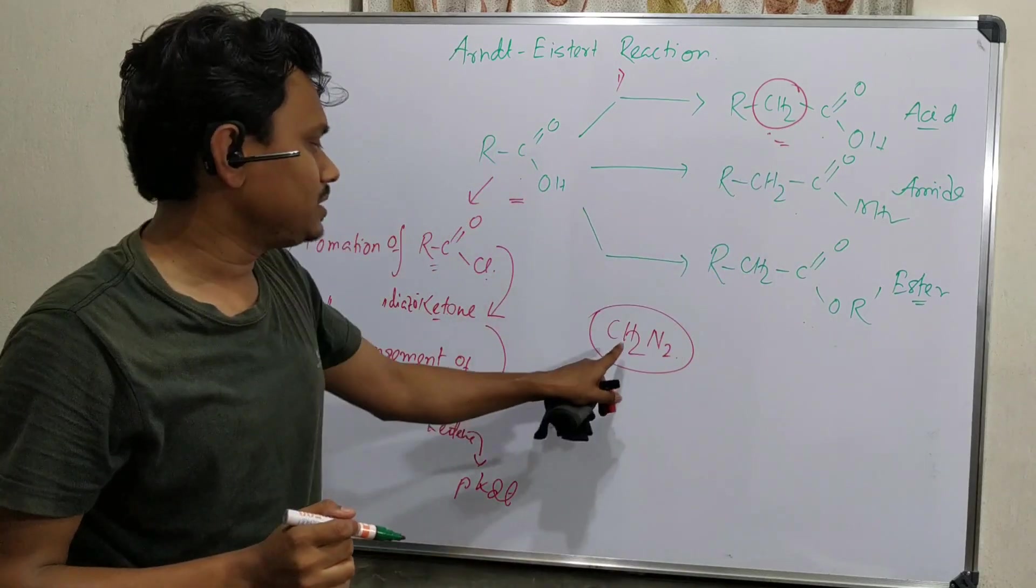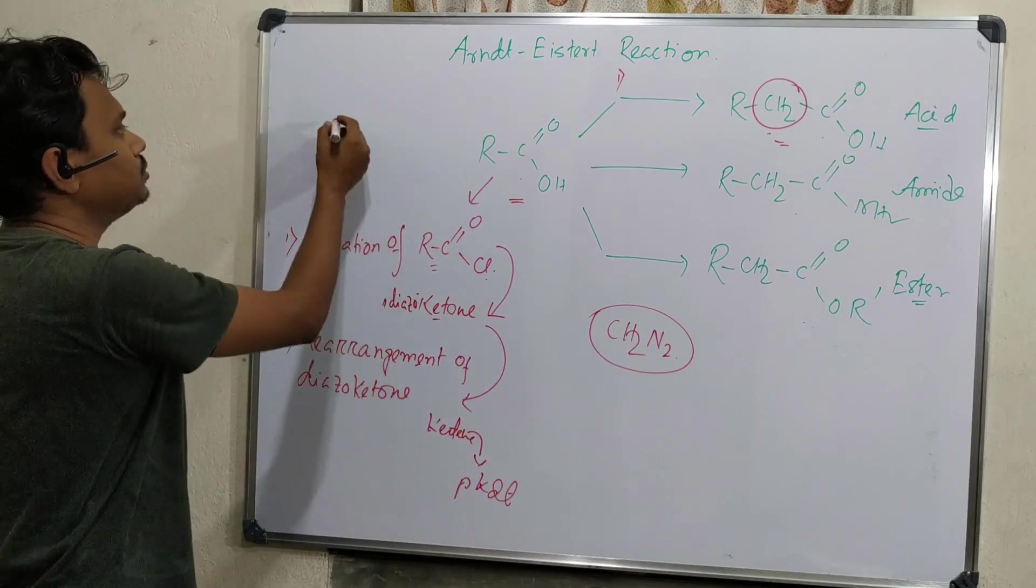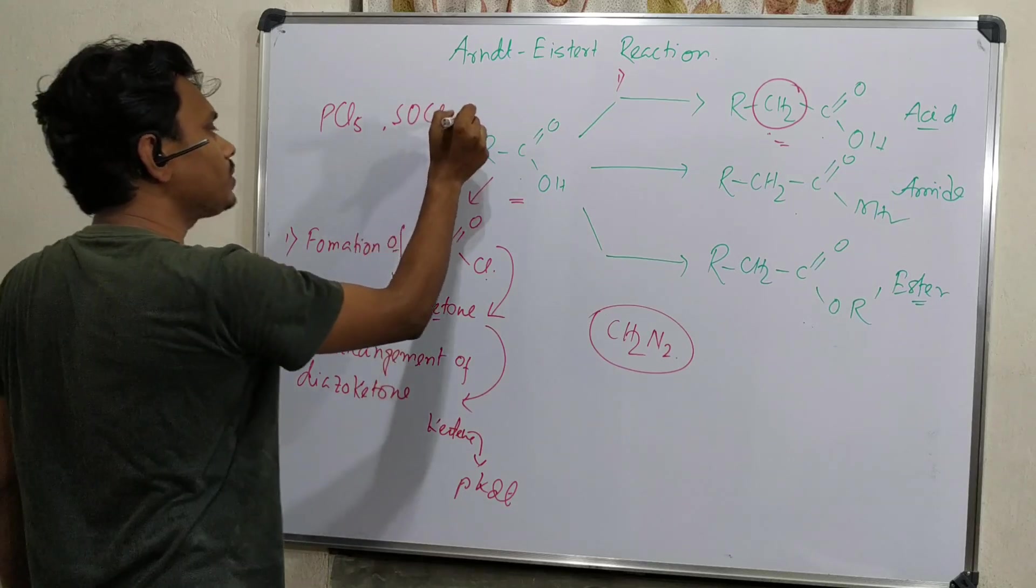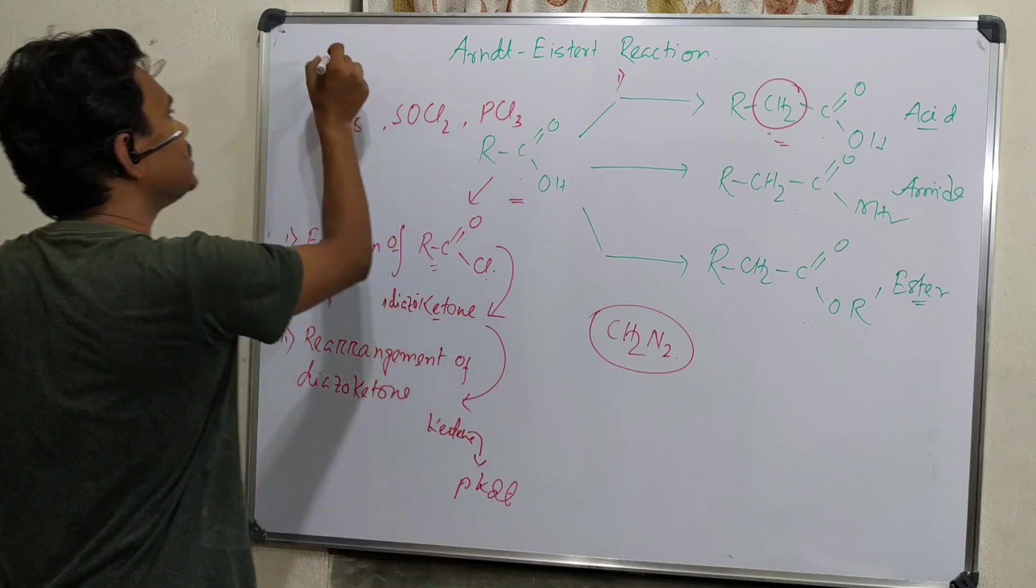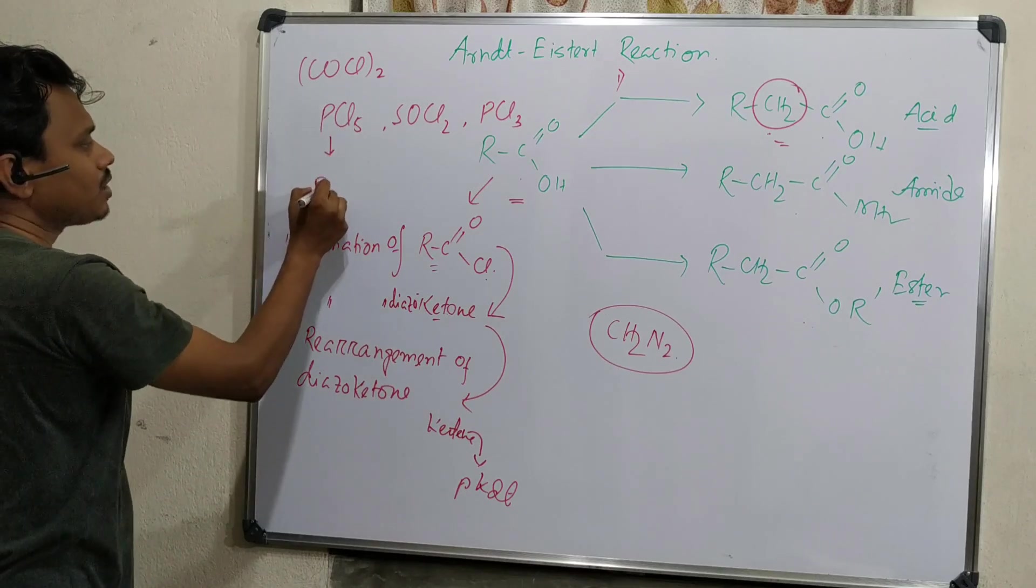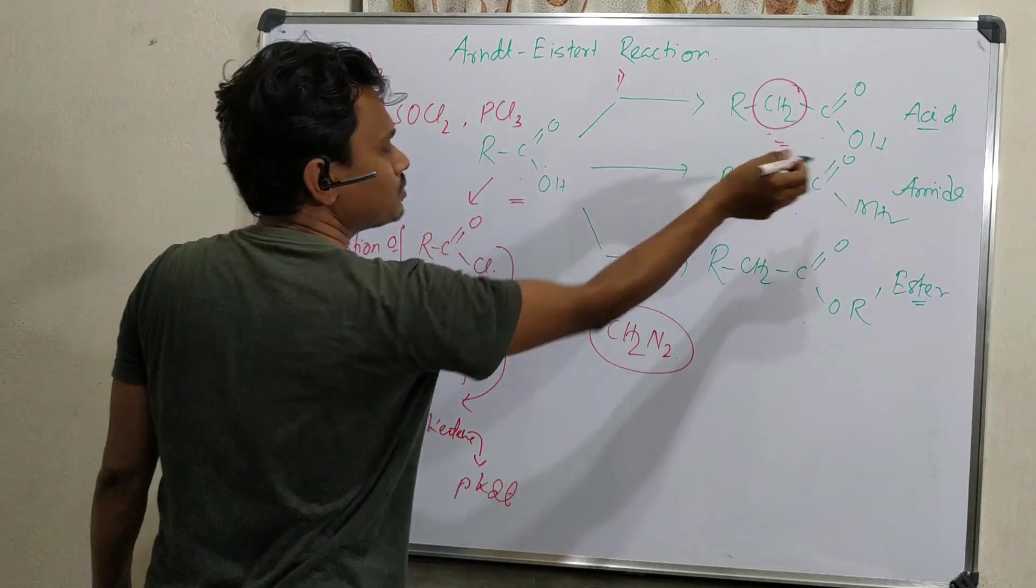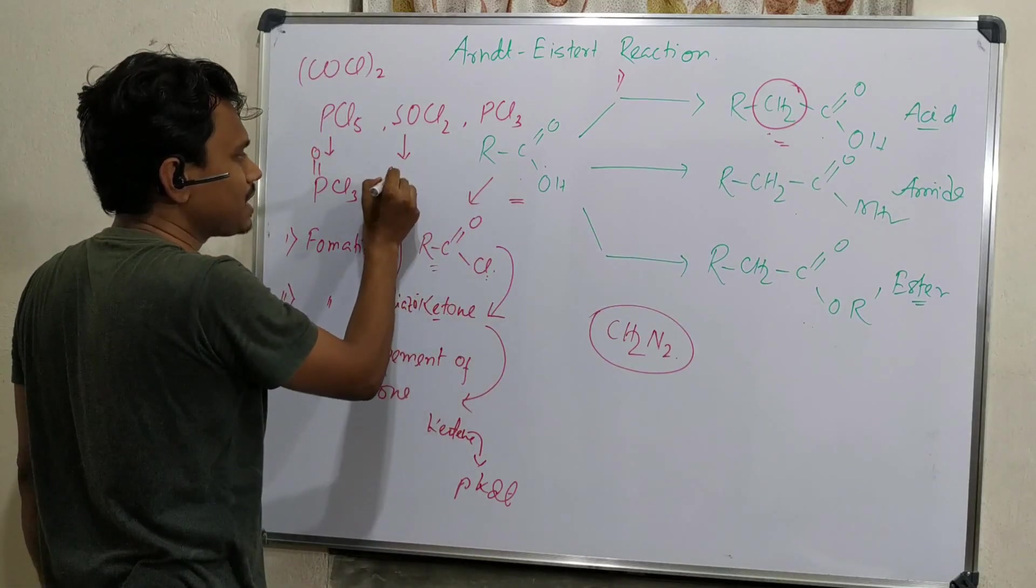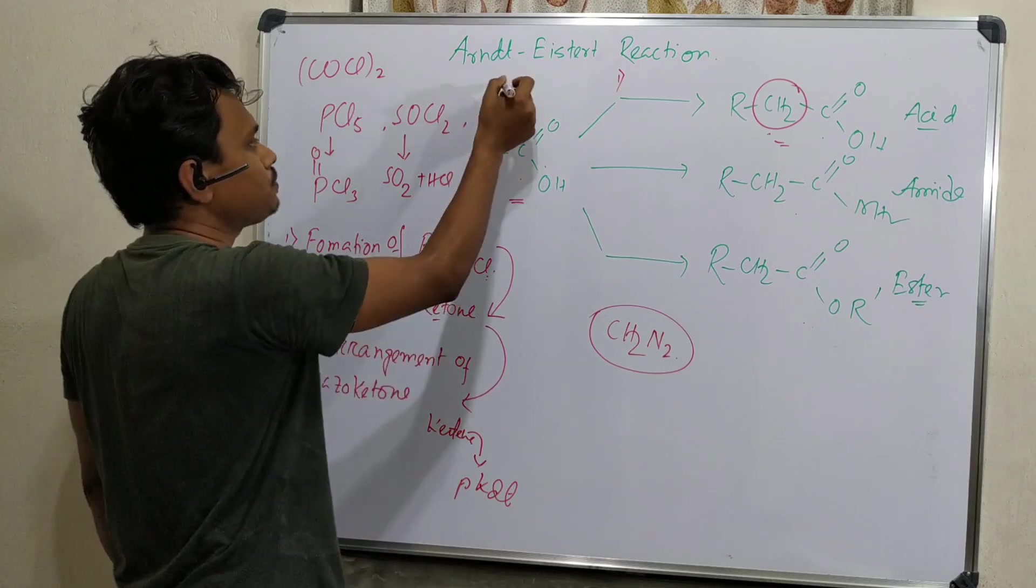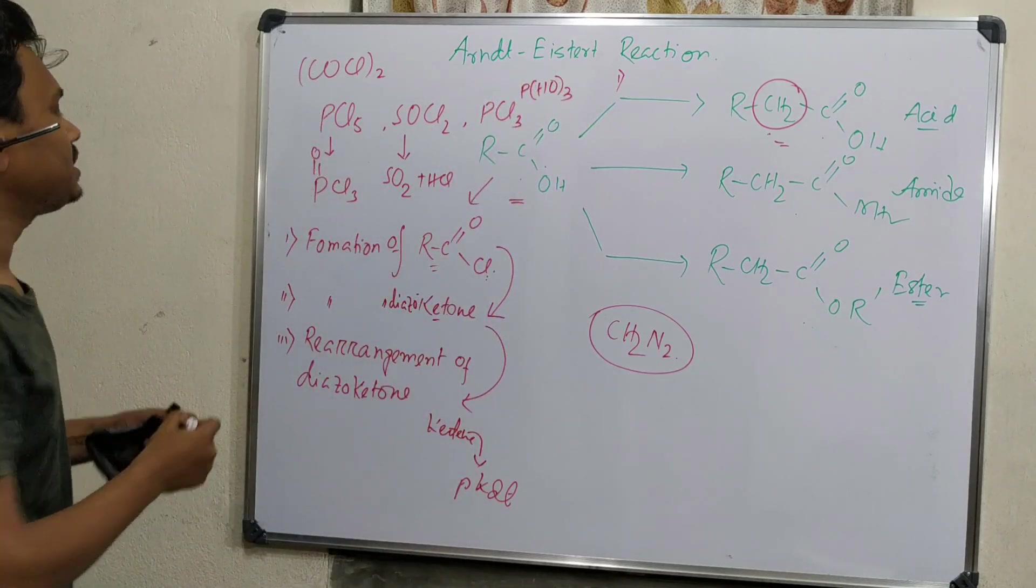Acid to acid chloride formation: for this step we can use PCl5, SOCl2, or PCl3, even COCl2 oxalyl chloride. If PCl5 reacts, it produces phosphorus oxychloride POCl3. But if SOCl2 is used for carboxylic acid to corresponding acid chloride formation, it produces SO2 sulfur dioxide plus HCl, both are gas, so they go outside the reaction media.